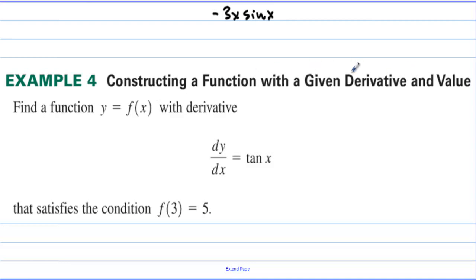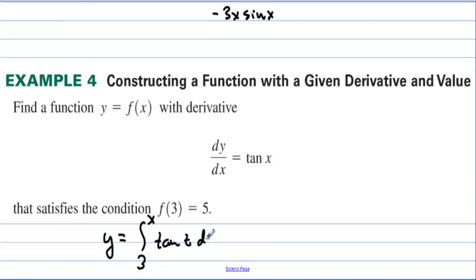Constructing a function with a given derivative and value. Find a function y equals f of x with the derivative that is tangent that satisfies the condition f of 3 equals 5. Well, if we have y equals the integral from 3 to x of the tangent of t dt, plus 5, that gets everything that's asked. First of all, the derivative would be tangent of x and the derivative of 5 would be 0. So this function has a derivative that is tangent. And if I plug 3 in for x, we get 5 — because if you integrate from 3 to 3, all of this is 0, and then 0 plus 5 gives you 5. So the trick is, whatever this value is right here, that becomes your lower limit and then x is your upper limit.